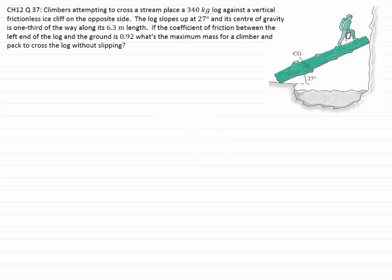In this question we're asked to consider a climber trying to cross a stream by placing a 340 kilogram log against a vertical frictionless ice cliff. The log is sloped up at 27 degrees, and its center of gravity is one-third along its 6.3 meter length. The coefficient of friction between the left end and the ground is 0.92.